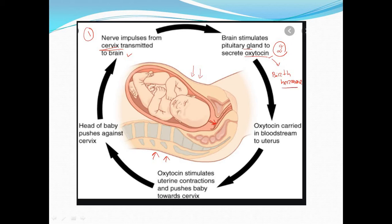Oxytocin helps in childbirth along with smooth labor. After secretion of oxytocin, it is carried in the bloodstream to the uterus. All hormones are secreted from endocrine glands and are ductless, so their secretion mixes with blood and the blood carries it to the target organ. Here the target organ is the uterus. In the fourth step, oxytocin stimulates uterine contraction and pushes the baby towards the cervix.